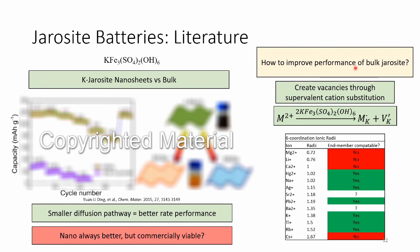Making nano materials takes away from the economic benefit of using this waste material, and even then performance is still not great. The thesis of this work was: how can you improve the performance of jarosite in the bulk phase? One idea is to take the potassium ion and replace it with a divalent ion. By replacing it with a divalent ion you're introducing vacancies, which should increase lithium diffusion in the material and improve performance. I was looking at different substitutes for potassium based on atomic radii and compatibility — magnesium and calcium are not compatible, they're too small to be stable in that spot, and cesium is too large.